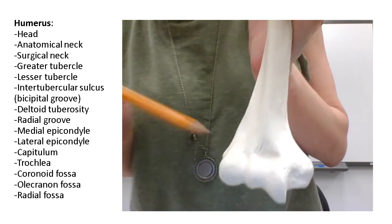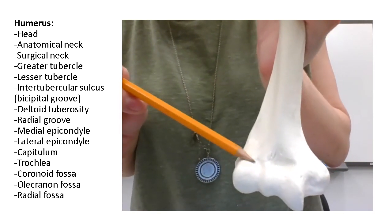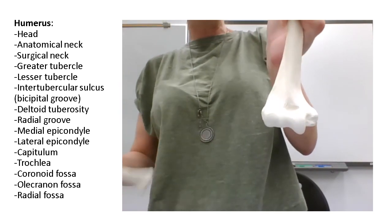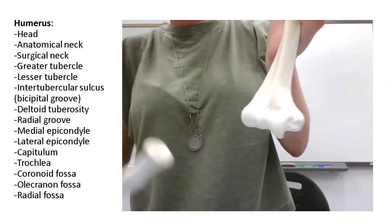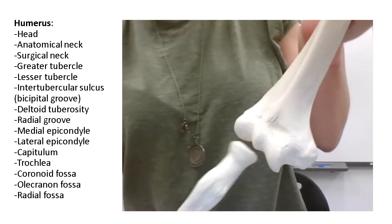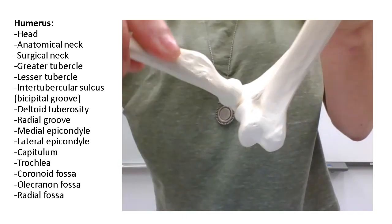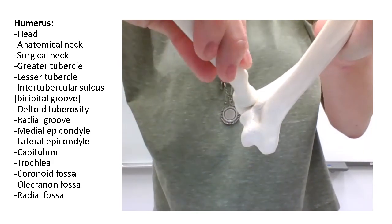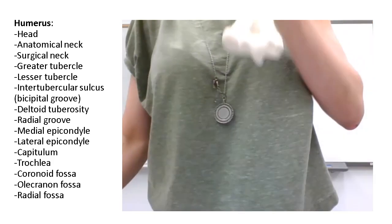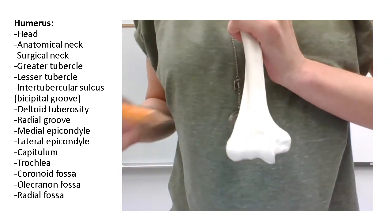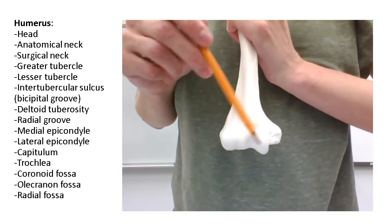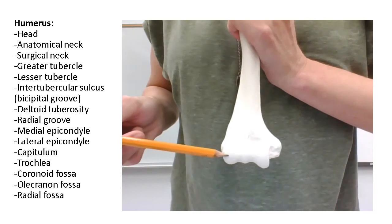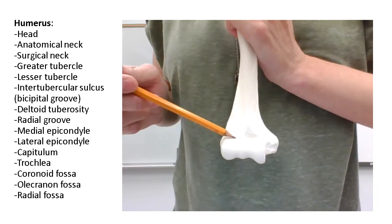There's also a tiny depression above the capitulum called the radial fossa, because the head of the radius slides in there when we bend our elbow. So looking at the front of the humerus: above the trochlea is the coronoid fossa, and above the capitulum is the radial fossa.